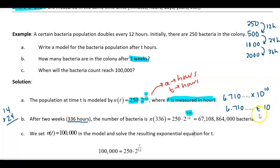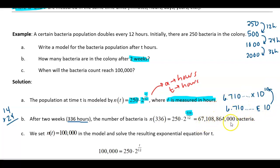The 10 that comes after the 'e' is the power in scientific notation. When you write it as a regular decimal, you move the decimal over 10 places, and that's how you get your answer. Just make sure you remember how to do your scientific notation.